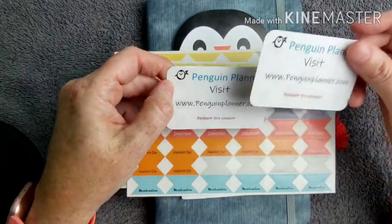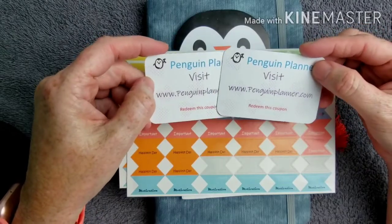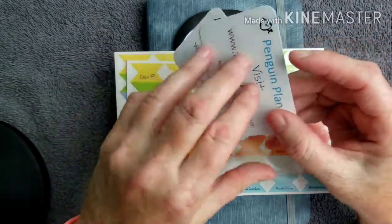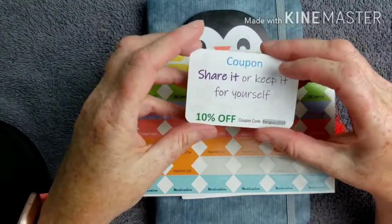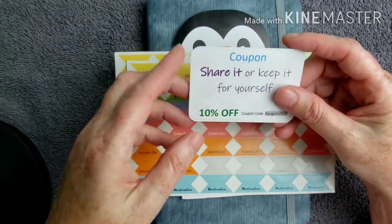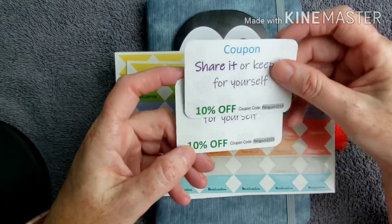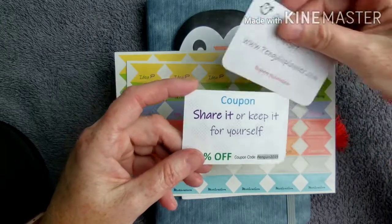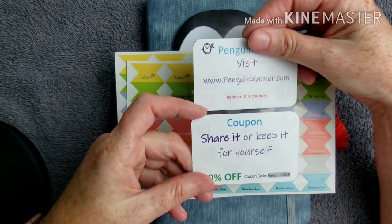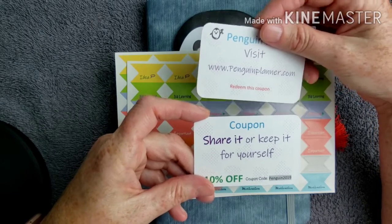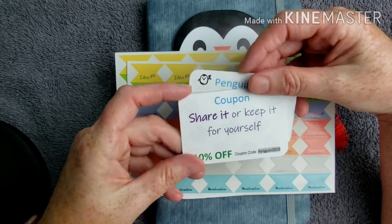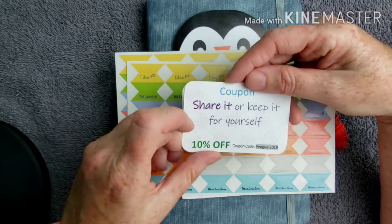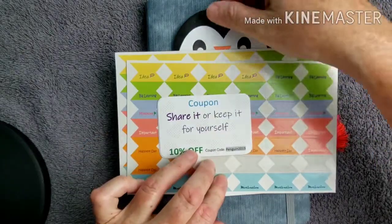They also sent me two of these coupon cards. I'm not sure if everybody could use these or if it could only be used twice, but whoever wants to can try it. You probably have to go to penguinplanner.com to use this coupon. I would imagine it's 10% off though. Coupon code penguin 2019. So that's everything that came with it.